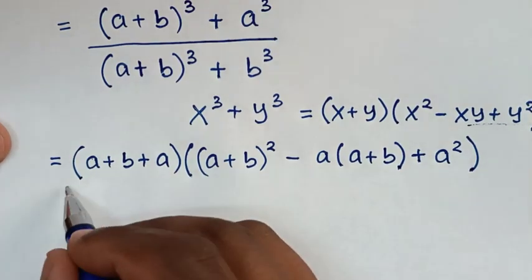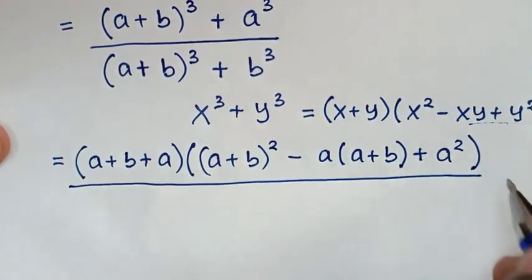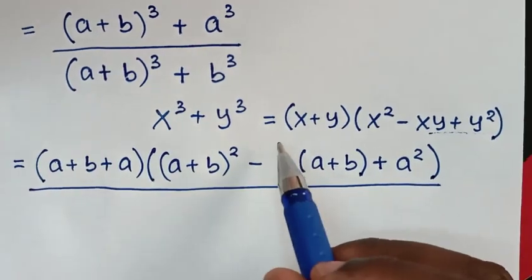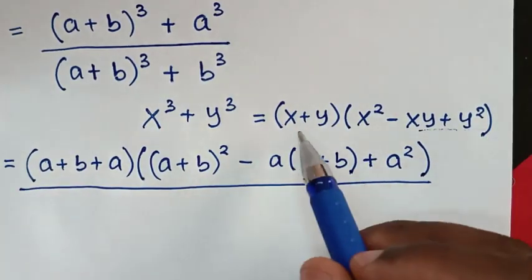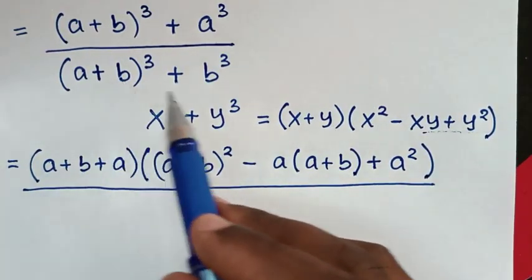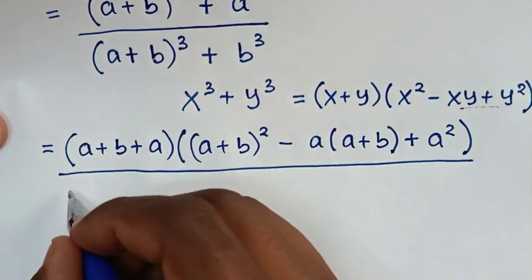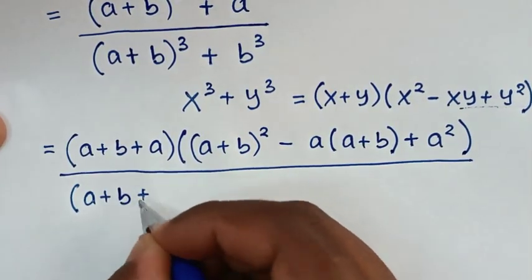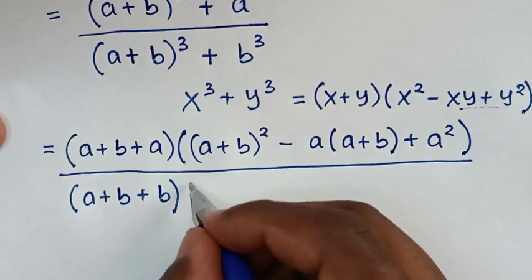Then it will be over. Also, here in the denominator, we'll apply this form. So, it will be X plus Y, it is A plus B plus B. So, bracket A plus B plus B bracket.